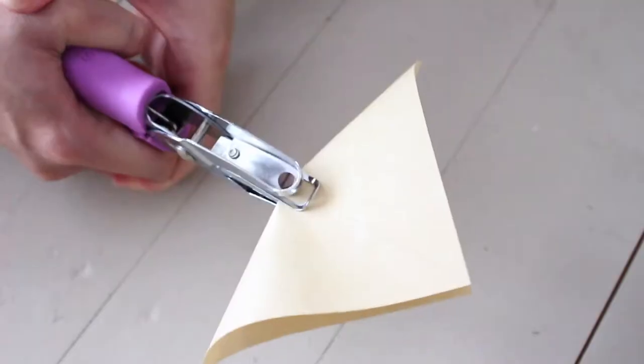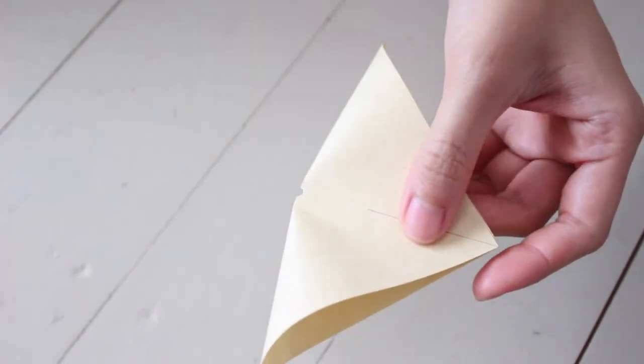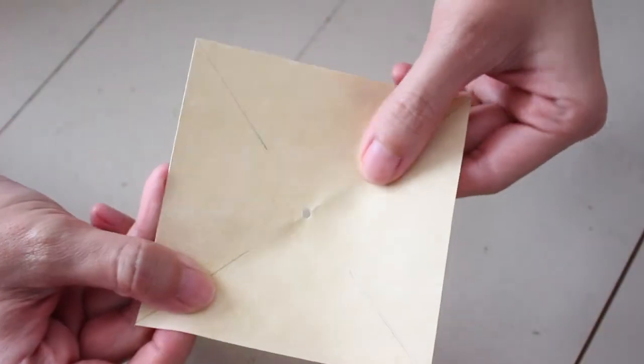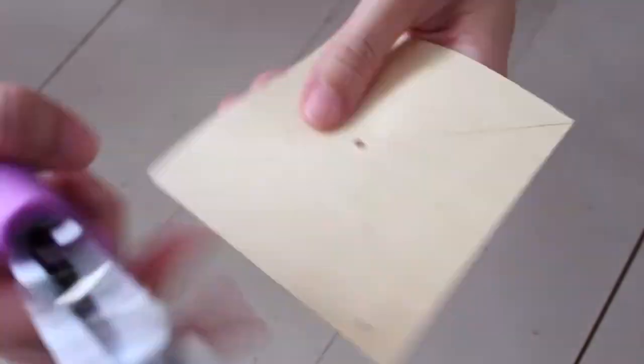Align the opposite corners and hole punch the center. Make a hole near the end of each corner.